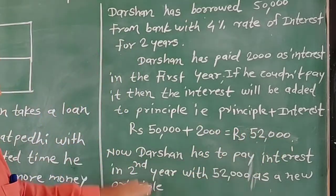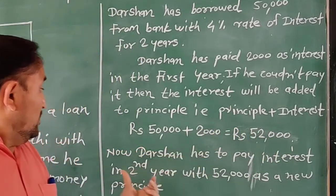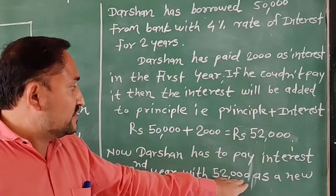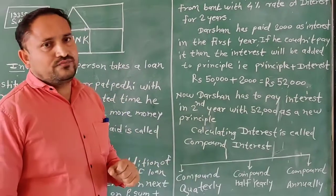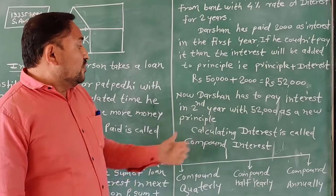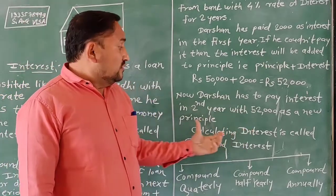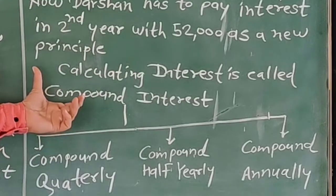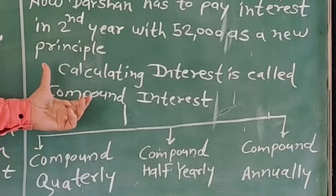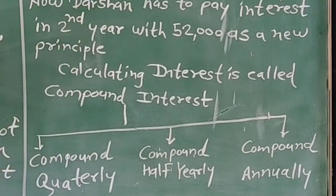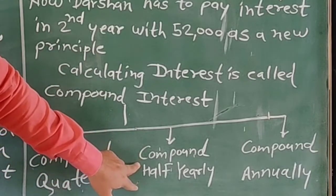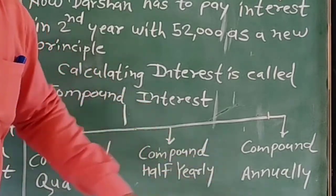Now, the person has to pay interest in the second year with 52,000 as the new principal. This is how we calculate compound interest. Compound interest is calculated in 3 different ways: compounded quarterly, compounded half-yearly, and compounded annually.